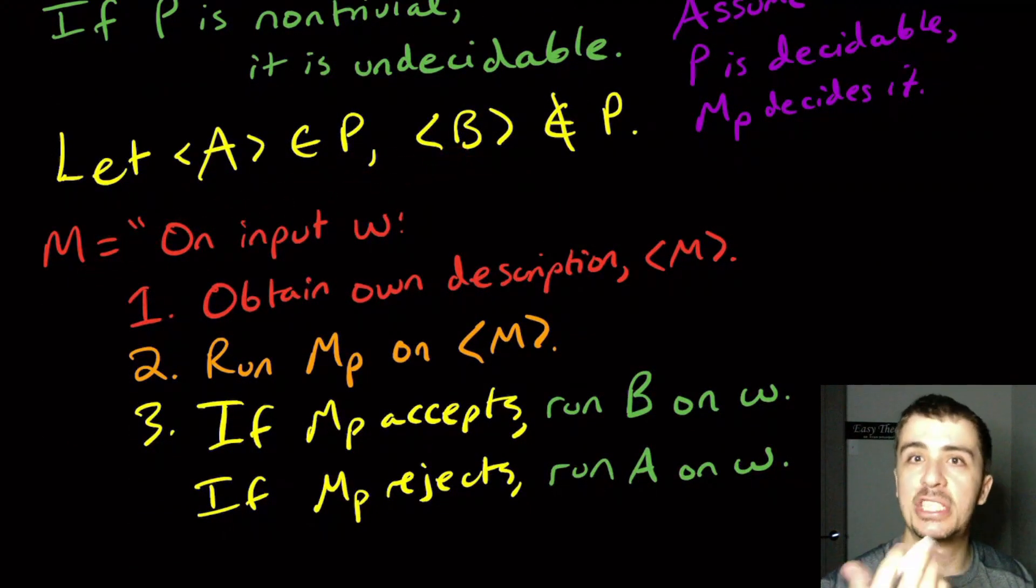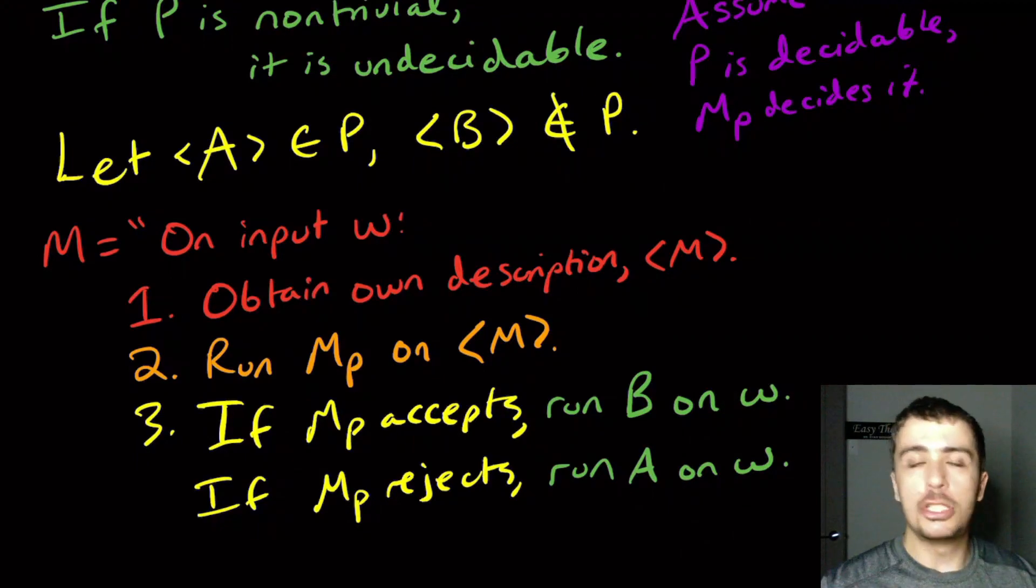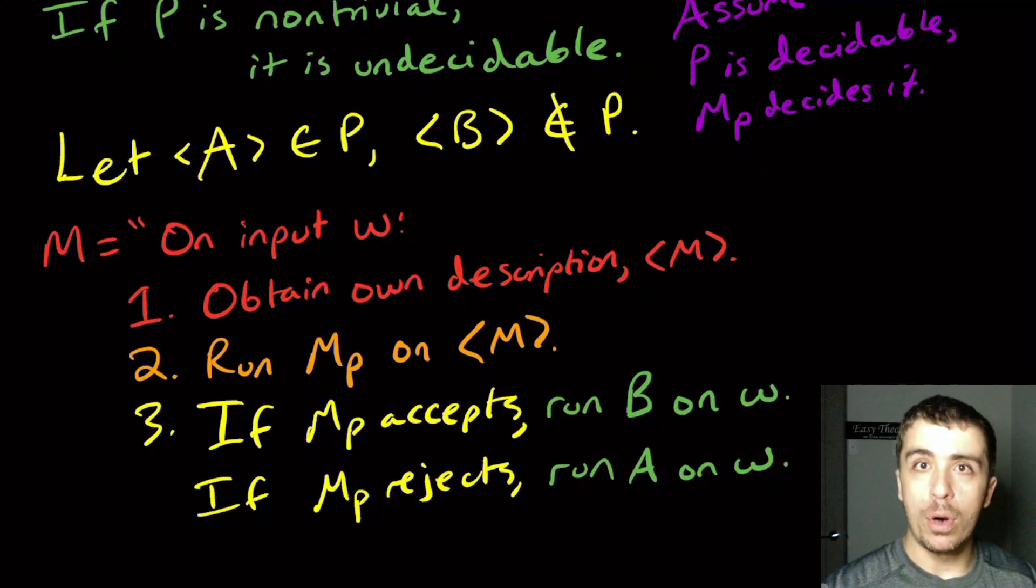In the first case, M and B have the same language, and here M and A have the same language. With respect to P, these two machines are indistinguishable. Whichever the case, therefore our original assumption that P was decidable is false.